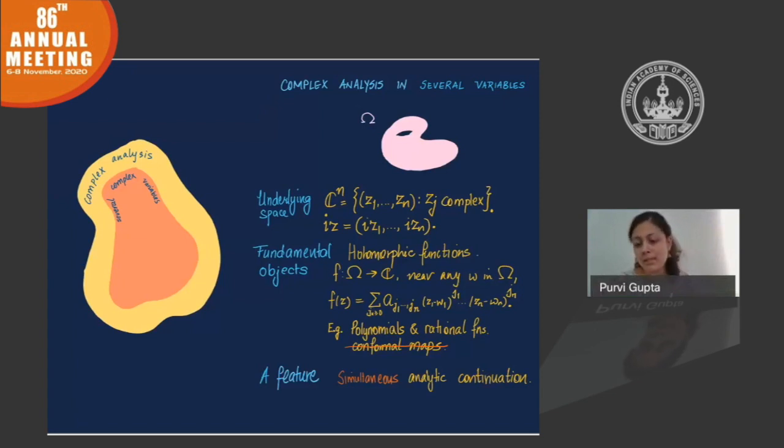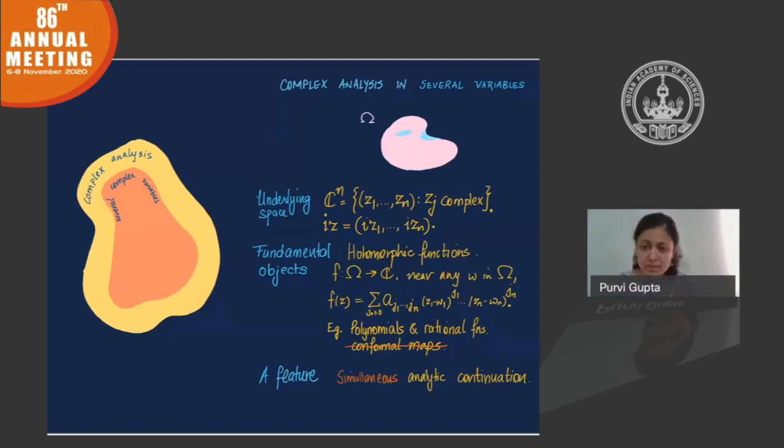What do I mean by simultaneous analytic continuation? This means that one can identify certain regions in the space of complex vectors, that every single holomorphic function defined on that region extends beyond the domain, and it extends to a common larger domain. This is something that will never happen in one complex dimension.